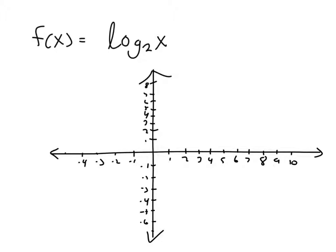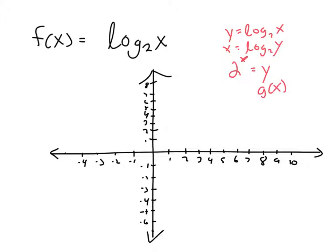Let me go ahead and prove that this is the inverse function of 2 to the x. When you're finding an inverse function, the first thing you do is replace f of x with y, and then you flip x and y. So what this is saying is the base is 2, the power is x, and it equals y. So g of x equals 2 to the x power — this is the inverse function.